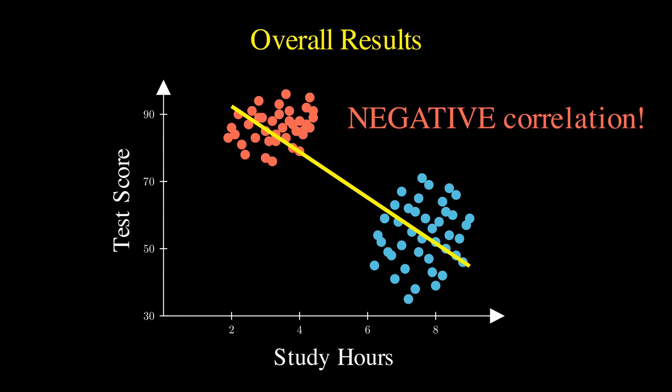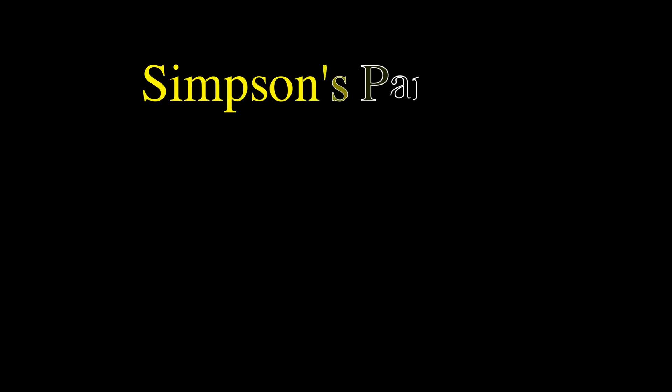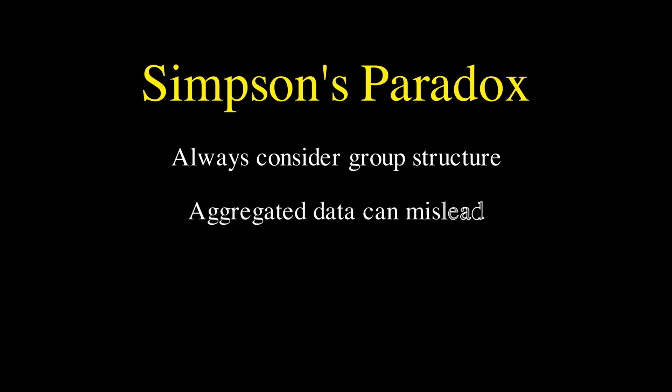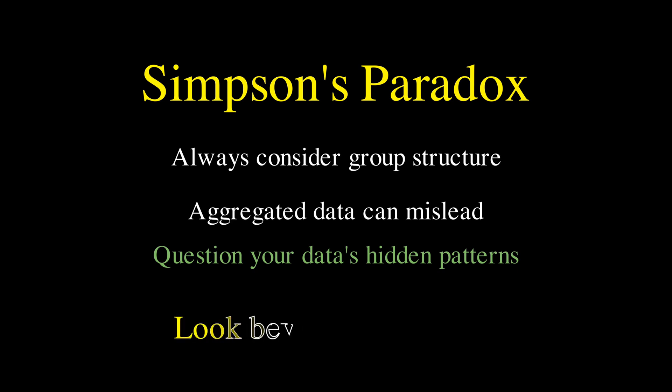So what's the key lesson here? Simpson's paradox teaches us that we must always consider group structure in our data, and that aggregated data can mislead us by hiding the true relationships that exist within subgroups. This is why we need to question our data's hidden patterns and look beyond the surface.